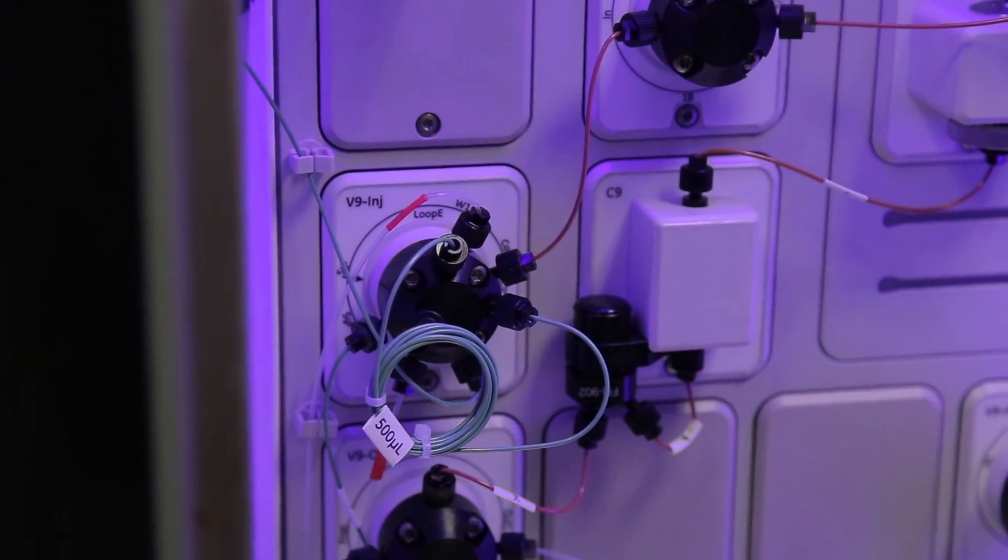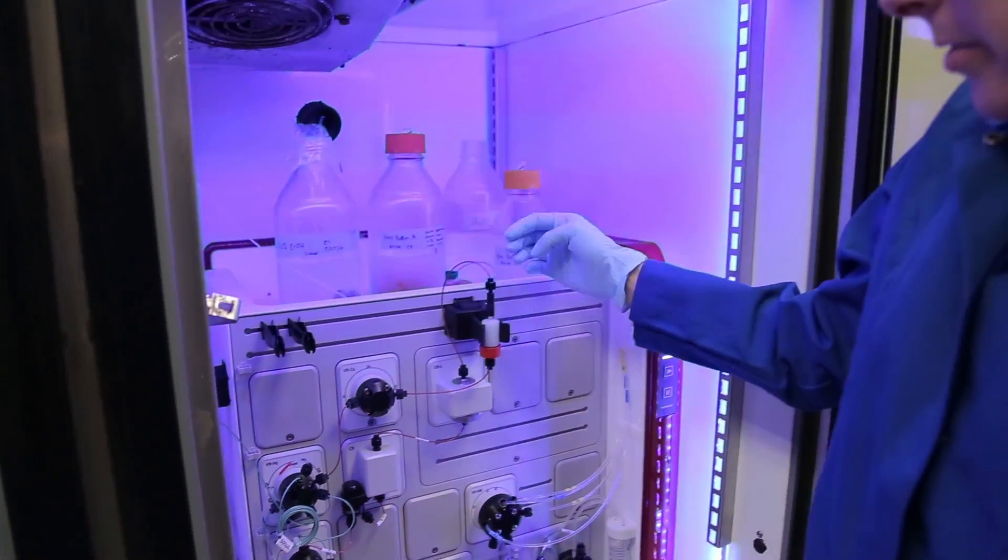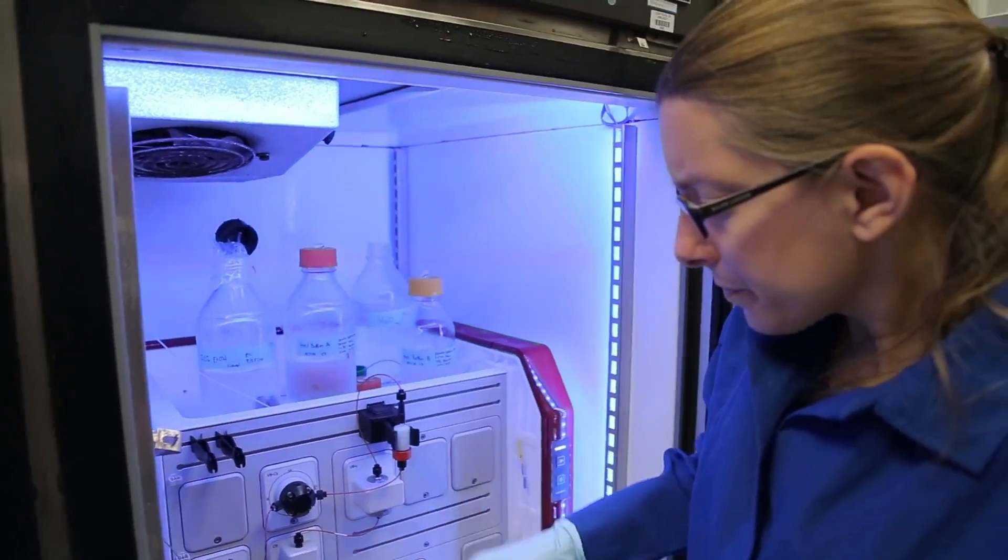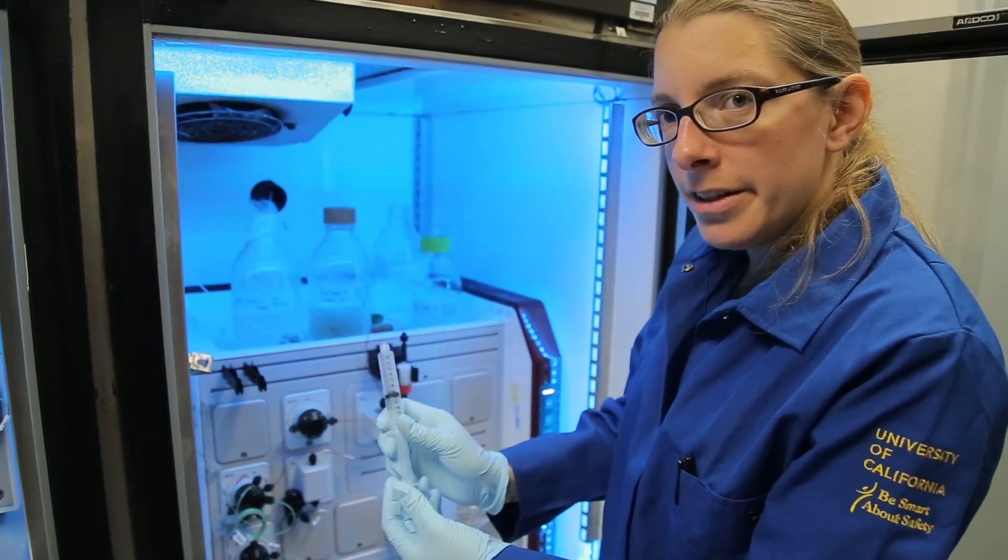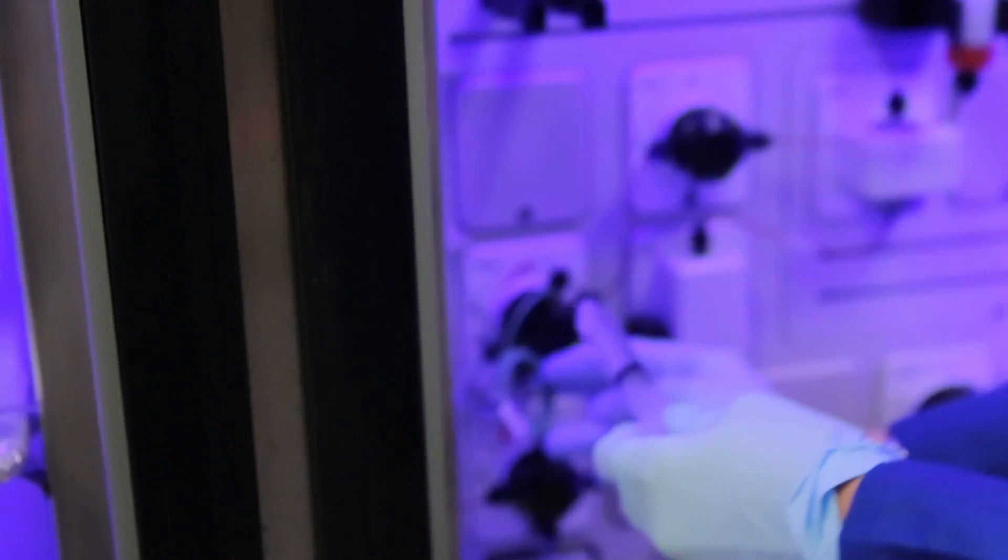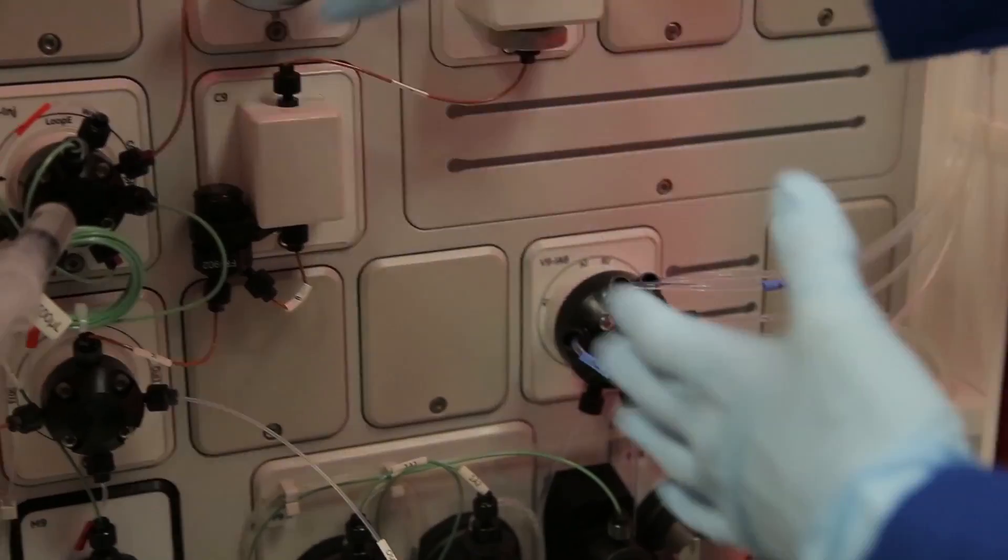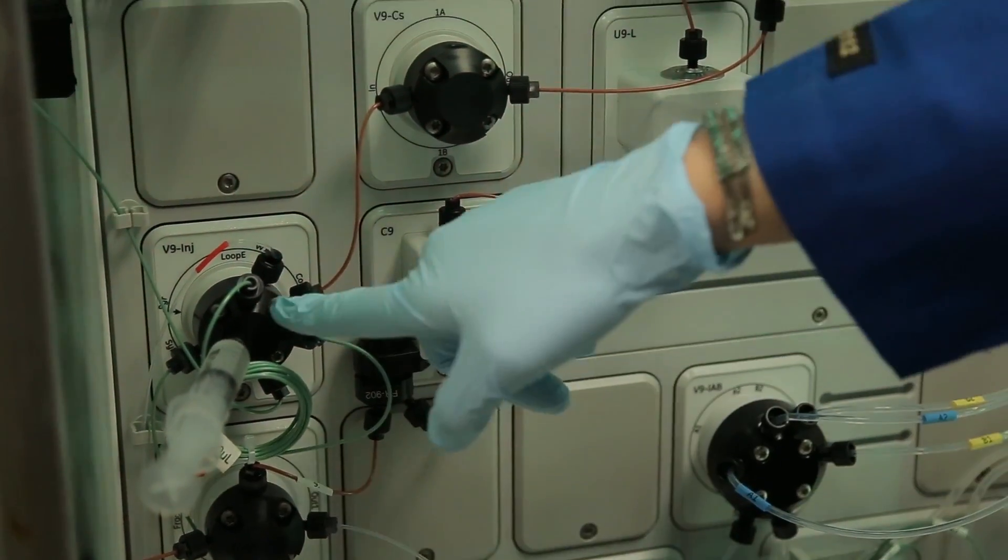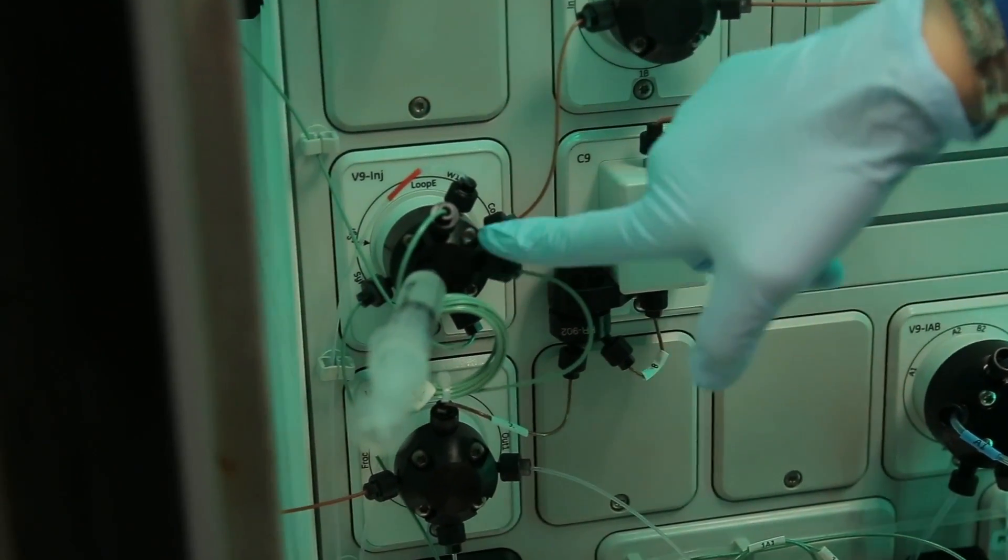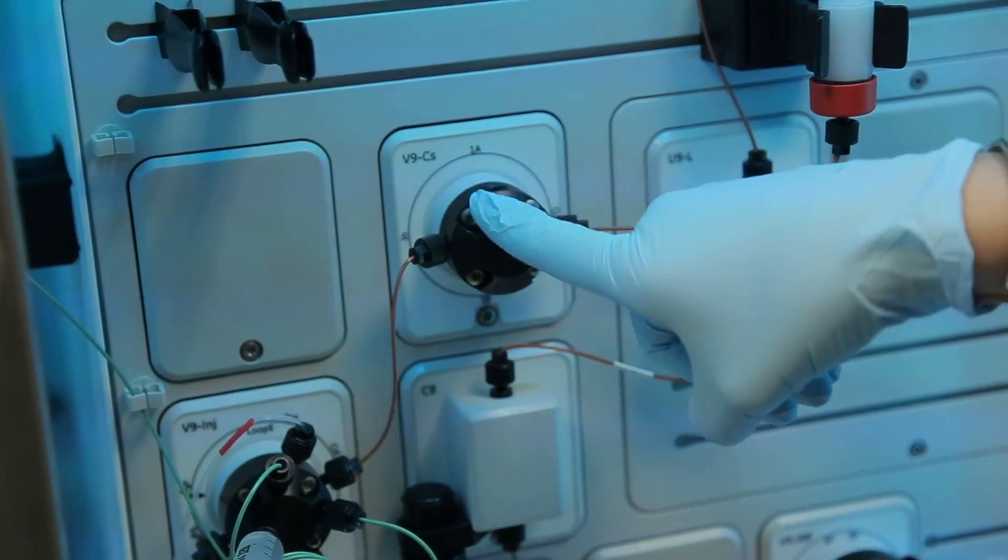So this is the FPLC instrument and we use it for purifying proteins. We're going to take our protein in a small volume in a syringe like this and actually load it into the system. The solution then pushes the protein through the entire system so it goes from the injection valve.